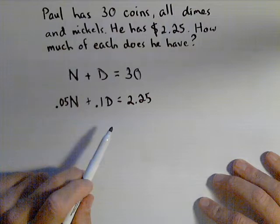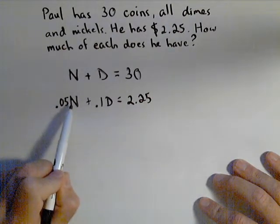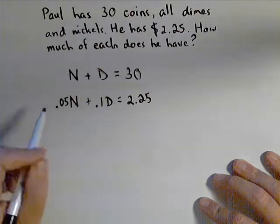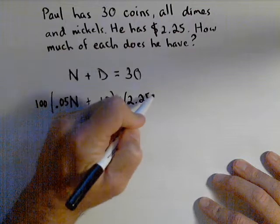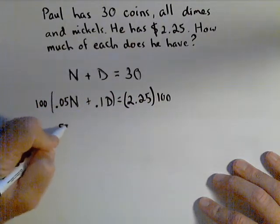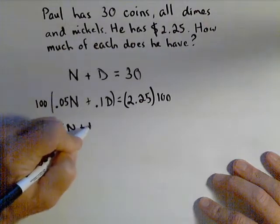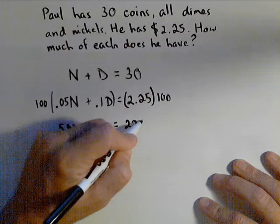Now one thing you could do, because sometimes you don't want to deal with decimals, is you can actually multiply through this bottom equation, multiply everything by 100. Because that gets rid of our decimals, and we end up with 5N plus 10D equals 225.